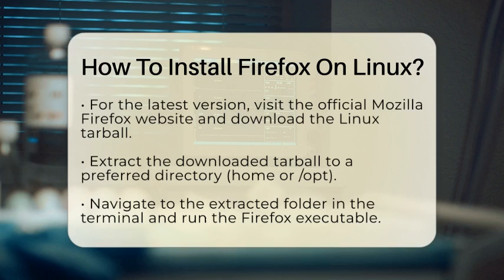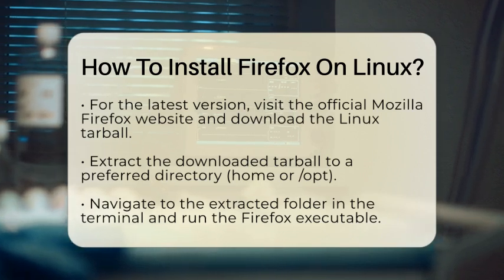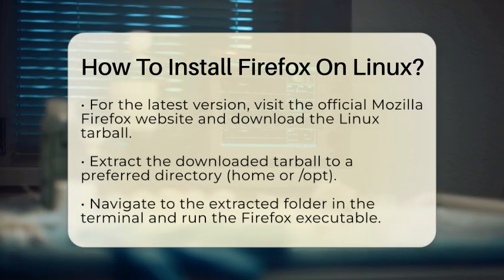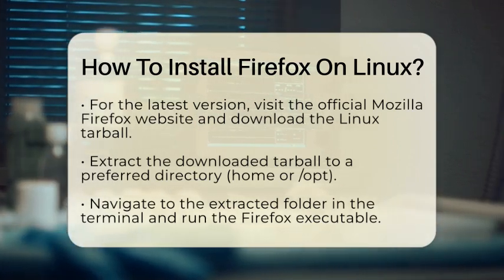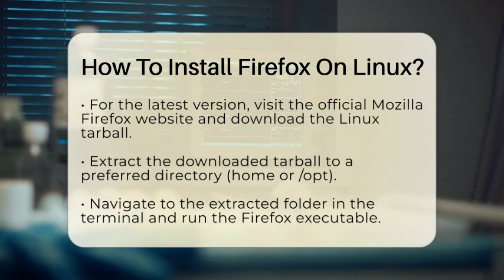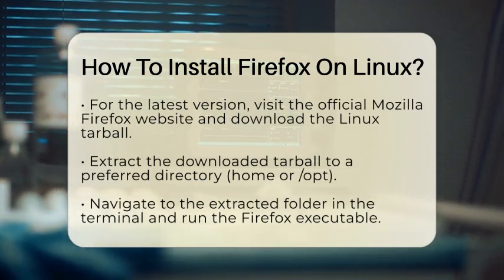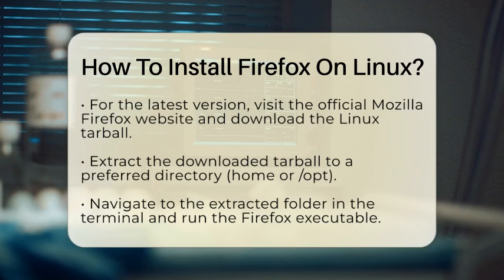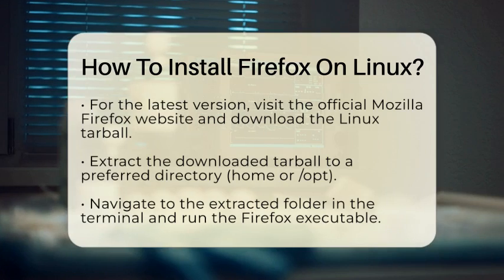If you prefer to have the latest version directly from Mozilla, you can download it yourself. Visit the official Mozilla Firefox website and download the latest Linux version as a compressed tarball file. After downloading, you will need to extract the file to a directory of your choice. You can choose your home directory or the opt directory for a system-wide installation.